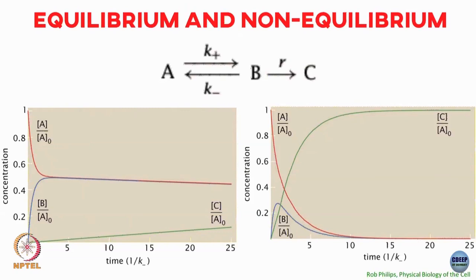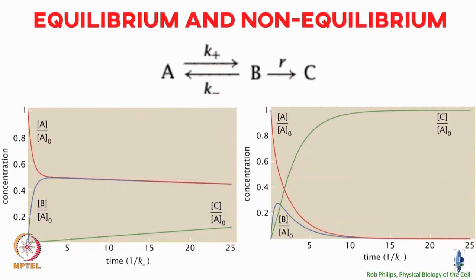So if you have well-separated time scales and are only interested in the sub-process of A converting to B and not the B going to C part, then you might be fine considering the A↔B interconversion as an equilibrium process and using equilibrium arguments to calculate statistical quantities. This depends on whether the time scales are well separated — if K⁺ and K⁻ are not much faster than R, the system does not come to equilibrium.